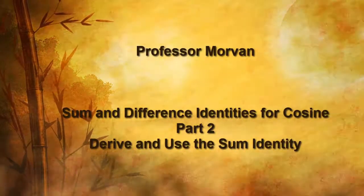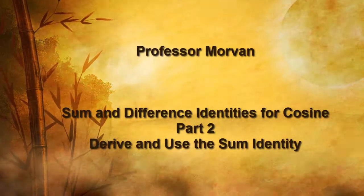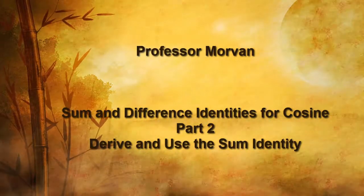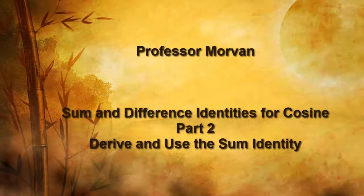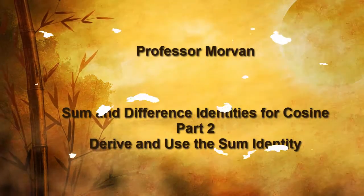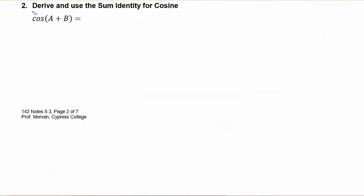In part two of our lesson on sum and difference identities for cosine, we will derive and use the sum identity. Here we'd like to derive an identity to use when we have the cosine of the quantity a plus b.